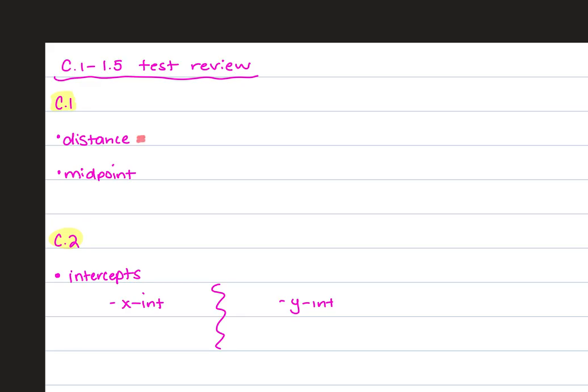So we're going to fill out this guy. This is the topics that are on your test. So it is C1 to 1.5. Like we talked about already, it is part calculator. I'll start with the calculator part. It's one big function that you have to find the max, the min, the zeros, the domain, the range, the increasing, the decreasing, all that stuff using your graphic calculator. And then we get into the actual questions that are non-calculator. And that was where we started in C1. This was the distance in the midpoint. So distance is square root of x2 minus x1 squared plus y2 minus y1 squared.